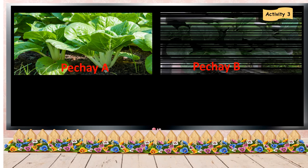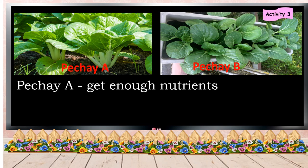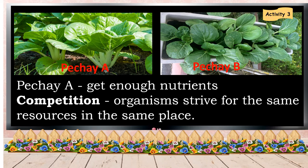Petschai A were planted directly to the soil, while Petschai B were planted in a pot. Petschai A will get enough nutrients. This relationship is called competition, because Petschai A strive for the same resources in the same place. Petschai A gets enough nutrients because the soil is too large for them, while Petschai B has limited soil.